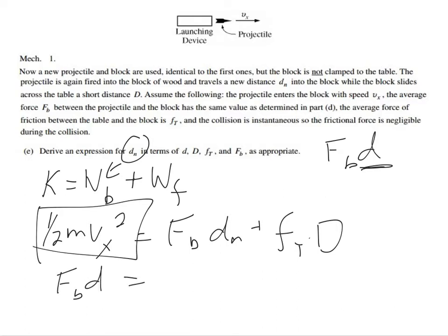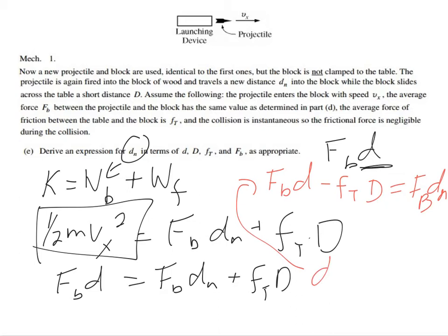I'm not allowed to use v_x or m from before. So I think I have to substitute in. Oh wait, if you recall back from before, that kinetic energy was equal to F_B times D, the original distance that it stopped. So instead of doing the one-half m v squared like this, I can actually use F_B times the original distance equals F_B times the new distance plus F_T times d. As I said, I'm a little bit messy here, so forgive me.